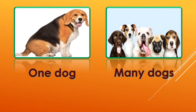Now let's see one more example. Look at the first picture — how many dogs? One, only one. So if only one, will you add S? No — no S. One dog. And look at here, how many dogs are here? Let's count — one, two, three, four, five. Five dogs, many — more than one. That's why D-O-G-S, dogs. If only one — no S. If many — then S.